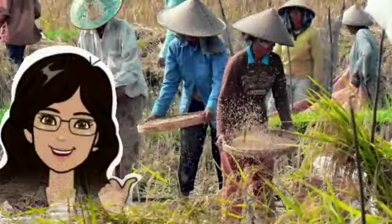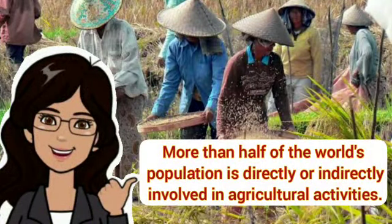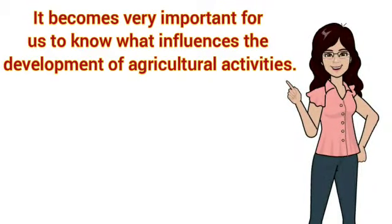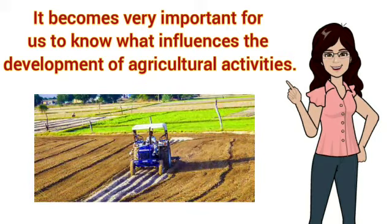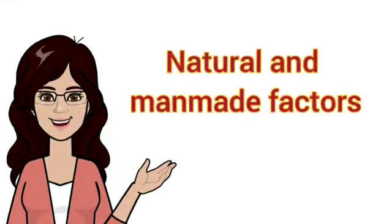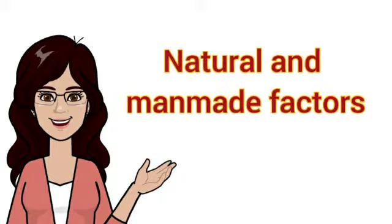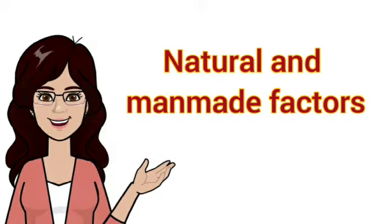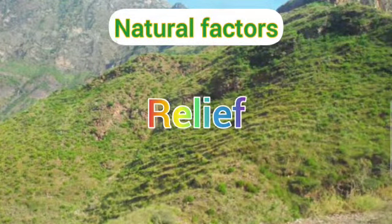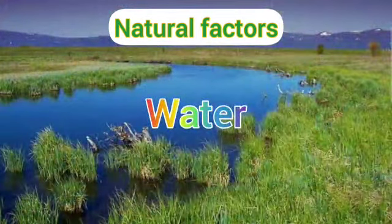Let us start today's class. More than half of the world's population is directly or indirectly involved in agricultural activities, so it becomes very important for us to know what influences the development of agricultural activities. The development of agricultural activities depends on various natural and man-made factors. Natural factors include relief, soil, water, and climate.